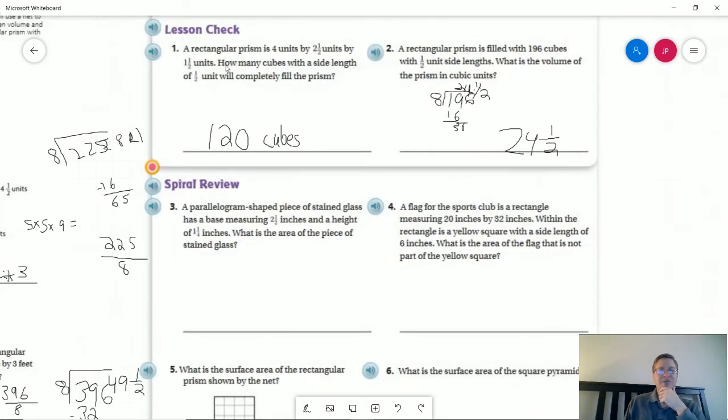So number 1 on the back, rectangular prism 4 units by 2 and a half by 1 and a half. Again I did my method for doubling. We want to just know the number of cubes. So 8 times 5 times 3. 8 times 5 would give me 40. 40 times 3 would give me 120. And we just want the number of cubes that would fill in the shape and that would be 120.